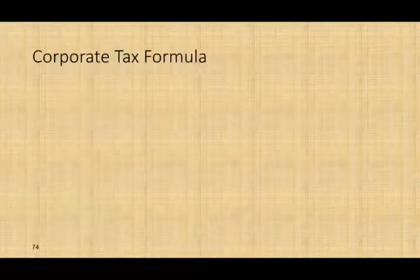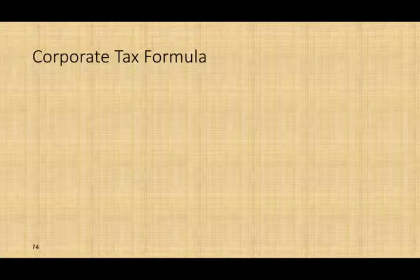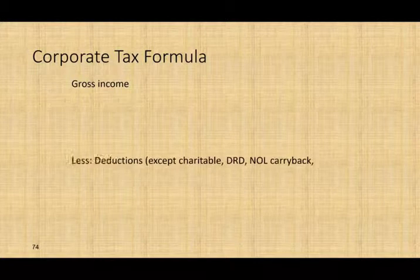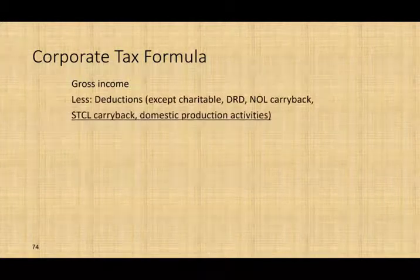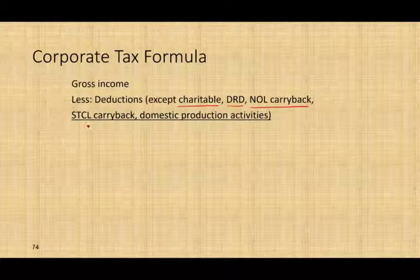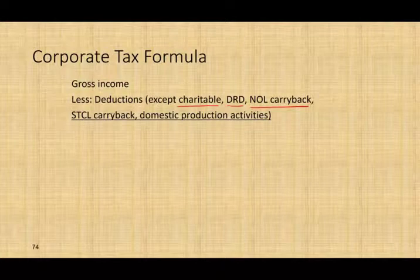Let's take a look at the corporate tax formula. We're going to start with gross income, then deduct your deductions. Your deductions would include operating expenses, but will not include charitable contributions, dividend received deduction, NOL carryback, short-term capital loss carryback, or domestic production activities. Essentially, it's your income minus your operating expenses.